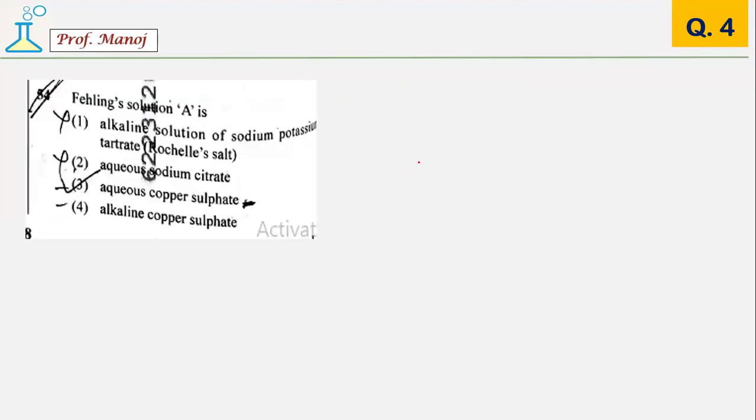This is a direct pick-up question from aldehyde ketone and practical chemistry. Fehling solution: there are two solutions, Fehling A and Fehling B. The solution of pure aqueous copper sulfate is known as Fehling A solution. Quite a straightforward question.